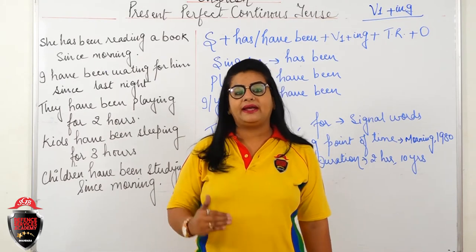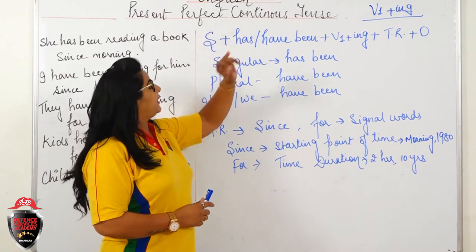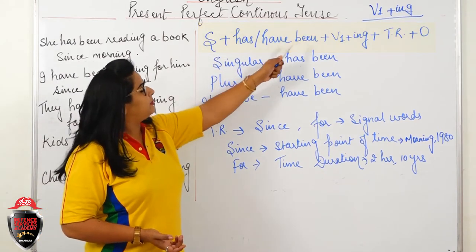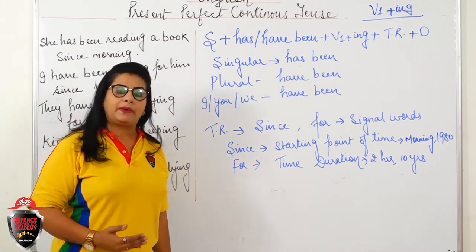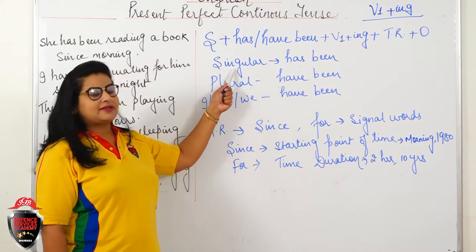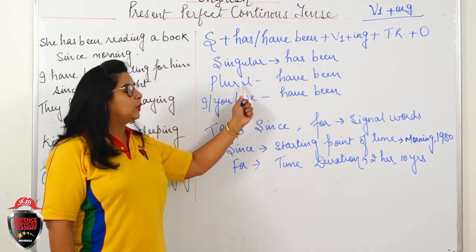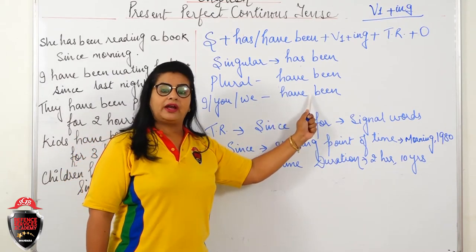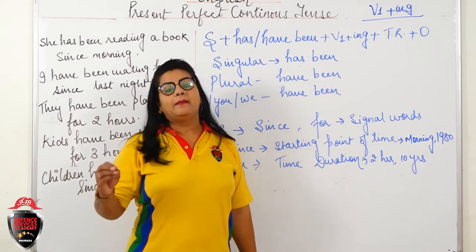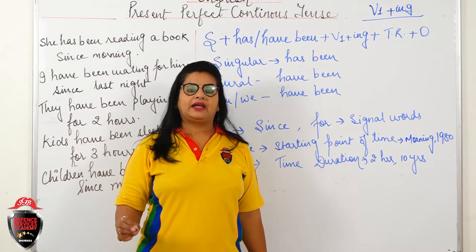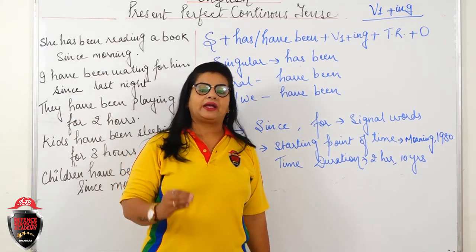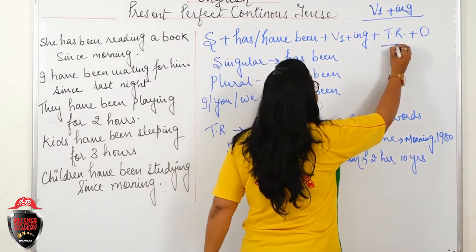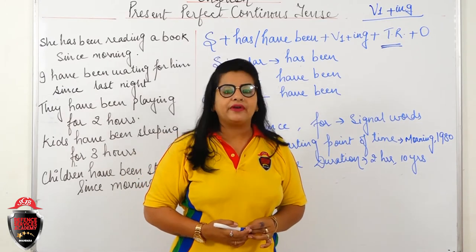Again repeating: an action which was started in the past and continuing till now. The formula for Present Perfect Continuous Tense is: Subject plus has been or have been plus V1 ING plus object plus time reference. Has is used with singular subjects; have is used with plural subjects and with I, you, we. 'Been' is added because after it we need to add V1 ING.